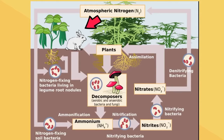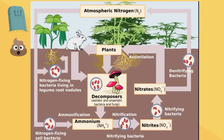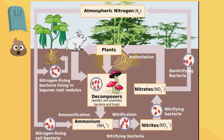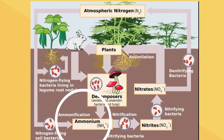Once in an animal after it eats the plants, the animal either dies or needs to get rid of waste. Another type of bacteria, along with decomposers, breaks down this nitrogen either in the waste or the dead animal. By a process called ammonification, the nitrogen can enter the cycle once again at nitrification, and the cycle continues.